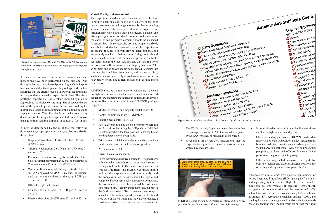The visual pre-flight assessment should start with the cabin door. If the door is hard to open or close, does not fit snugly, or the door latches do not engage or disengage smoothly, the surrounding structure such as the door post should be inspected for misalignment, which could indicate structural damage. The visual pre-flight inspection should continue to the interior of the cabin or cockpit, where carpeting should be inspected to ensure that it is serviceable, dry, and properly affixed. Seat belts and shoulder harnesses should be inspected to ensure that they are free from fraying, latch properly, and are securely attached to their mounting fittings. The windshield and windows should be inspected to ensure that they are clean and free from cracks and crazing.